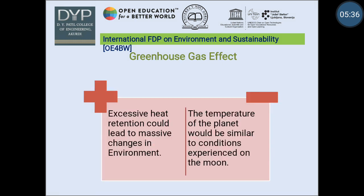Now let's see the greenhouse effect. What is the greenhouse effect? The greenhouse effect refers to the ability of the atmosphere to trap the sun's heat and increase the temperature of the planet. This trapped energy heats the atmosphere, increases the planet's temperature, and distributes the heat. As more greenhouse gases enter the atmosphere, their ability to trap heat increases, and excessive heat retention could lead to massive changes in environment — changes we are already seeing in the climate.